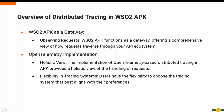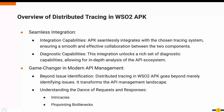WSO2 APK serves as your gateway to observing how requests traverse your API ecosystem. It acts as a central hub, observing and orchestrating the flow of requests, providing unparalleled visibility into your API processes. By employing an open telemetry-based distributed tracing implementation, APK provides a holistic view of request handling. Users enjoy flexibility in choosing the tracing system that aligns best with their preferences, creating a tailored experience. WSO2 APK doesn't stop at observation — it seamlessly integrates with your chosen tracing system, unlocking a rich set of diagnostic capabilities for in-depth analysis of your API ecosystem.